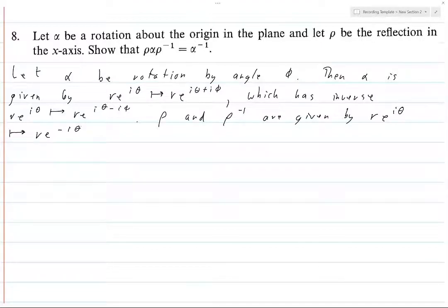So anyways, it's clear that rho inverse is rho because rho squared is one, because you flip about the x axis twice and went back where you started.